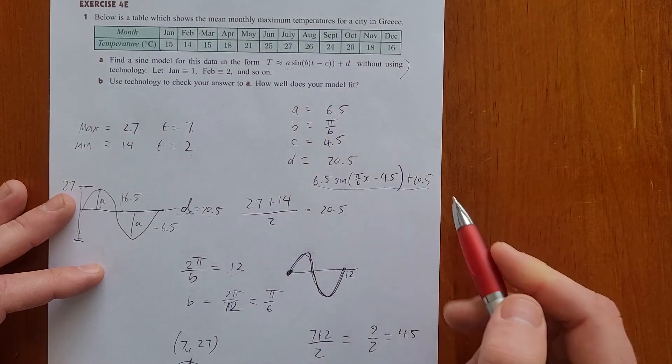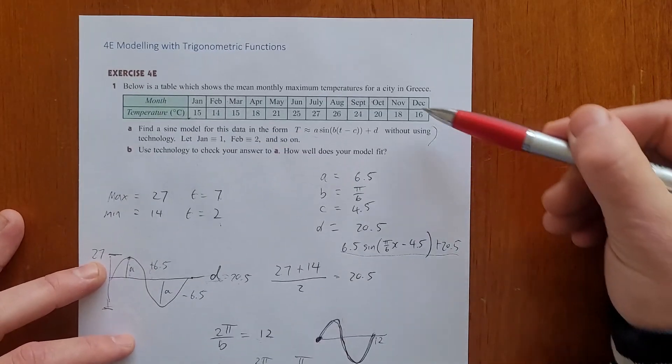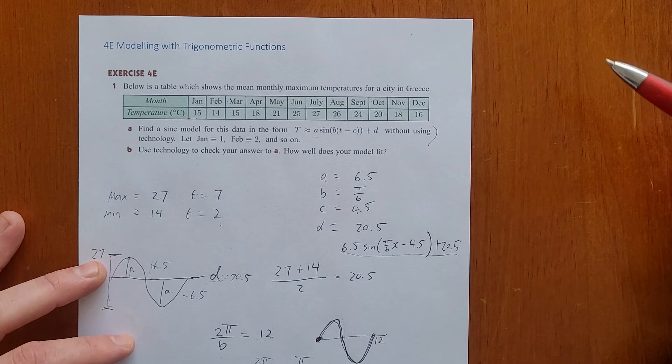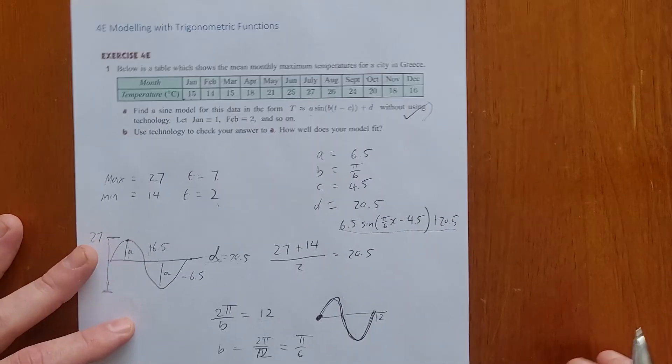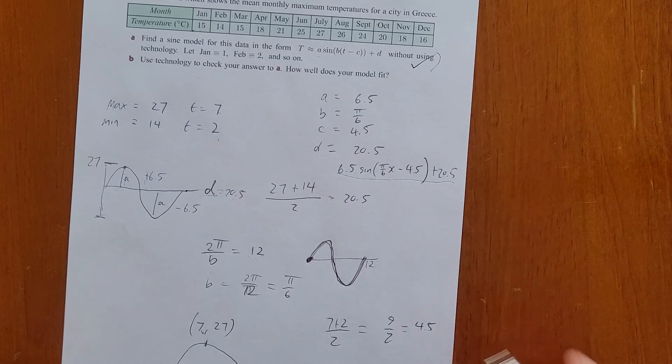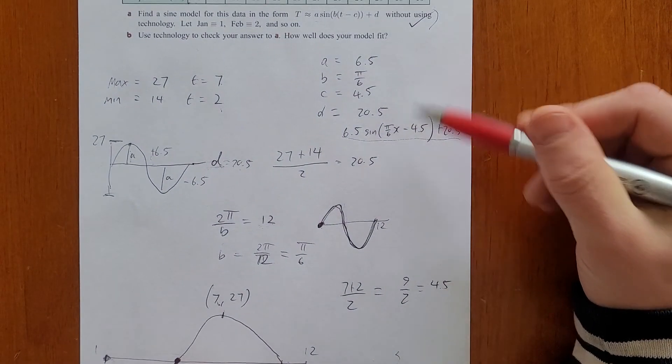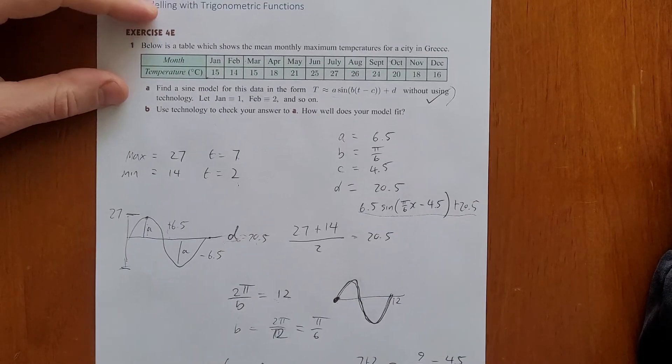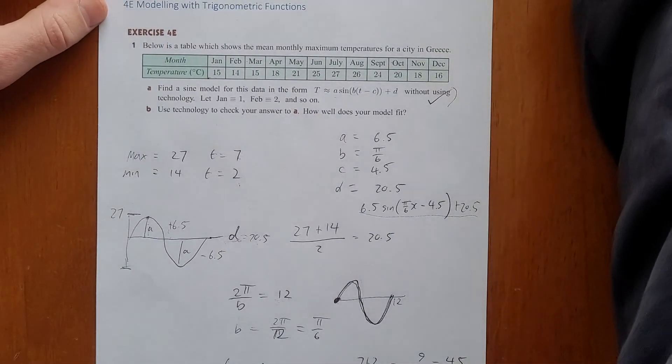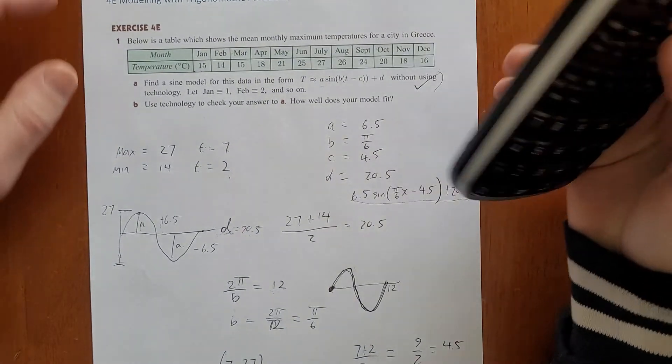If we were to graph this, we can use it to approximate the temperature throughout the year in Greece. So that's part A. That's how we do it. That's how we're thinking about these things manually, sort of working backwards from a given model. And so there's quite a bit of intuition required there.